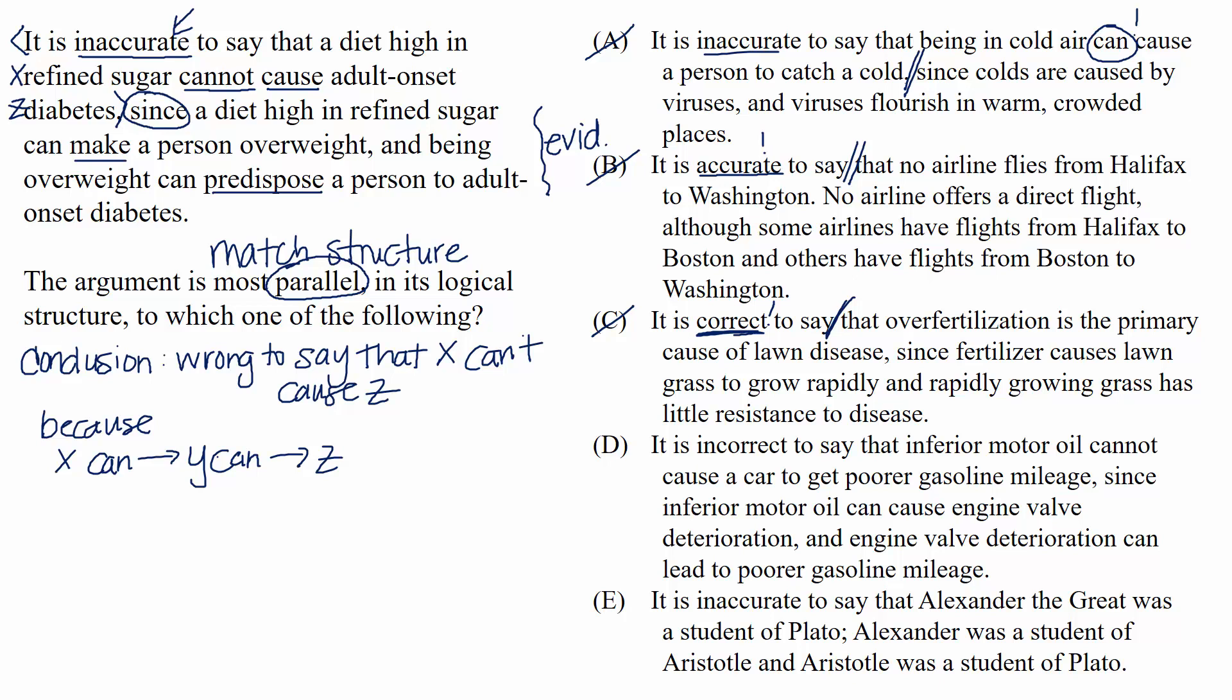D. It is incorrect to say that inferior motor oil cannot cause a car to get poor gasoline mileage, since inferior motor oil can cause engine valve deterioration, and engine valve deterioration can lead to poor gasoline mileage. This is a match. The conclusion is the same kind as the passage's conclusion, and the evidence type matches too.